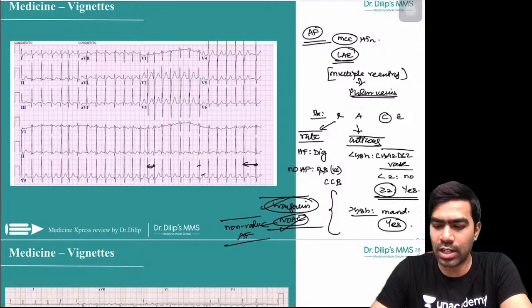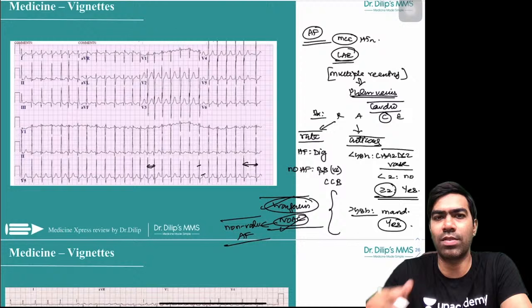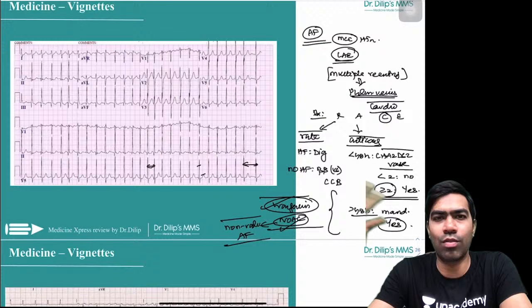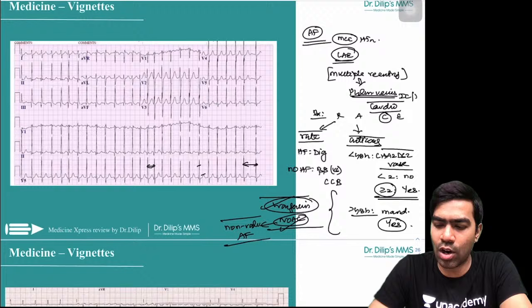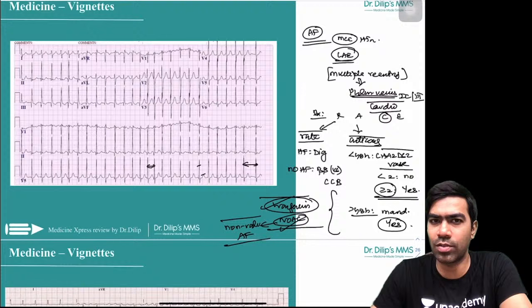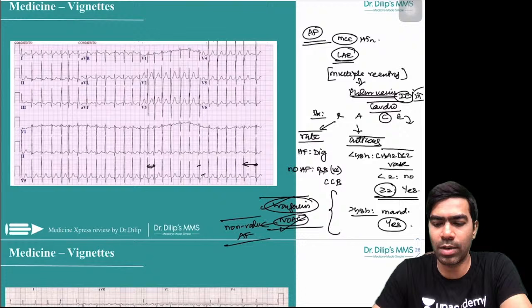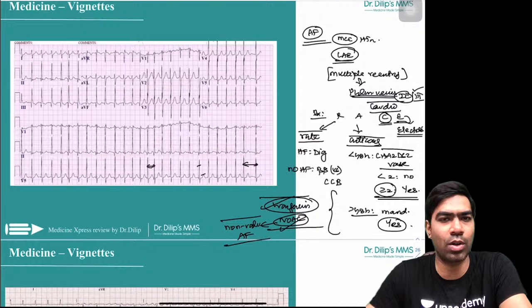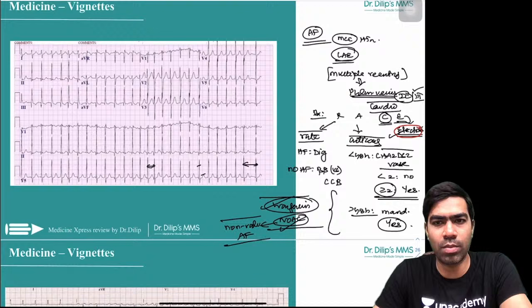Cardioversion for AF: chemical cardioversion — best drugs are Class 1C agents (flecainide, propafenone), but contraindicated in structural heart disease; use amiodarone (Class 3) if structural heart disease is present. Electrical cardioversion is overall better than chemical cardioversion. Treatment of atrial flutter is very similar to AF. Atrial flutter is a single macro-reentry circuit in the right atrium, whereas AF involves multiple circuits near the pulmonary veins. Flutter is associated with right atrial enlargement, typically from pulmonary causes.